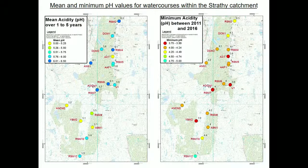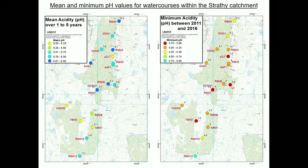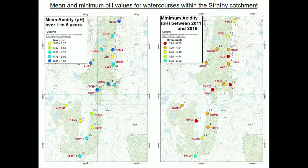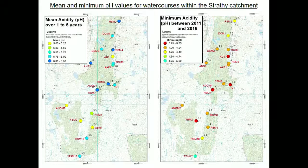The pH in the main stem of the River Strathy ranges from 6.2 at the lowest reaches to 5.9 in the upper reaches — not much variation in actual pH. The tributaries coming off the peatlands have lower mean pH values of around 5.1 to 5.5. The minimum pH map shows values typically between 4 and 4.3 on the main stem, with the lowest minimum at RSM12 at 5. Some tributaries are much more acidic.